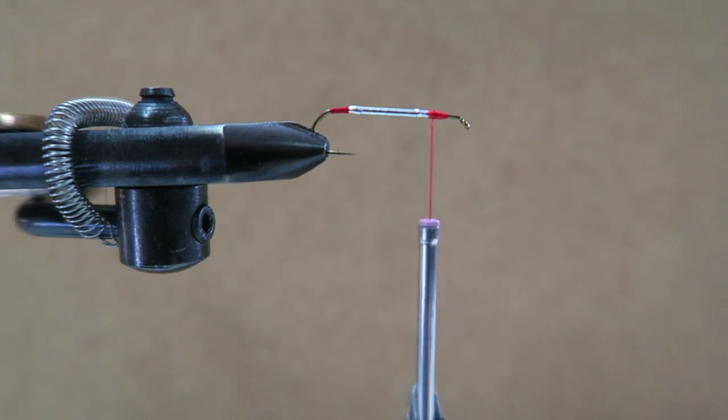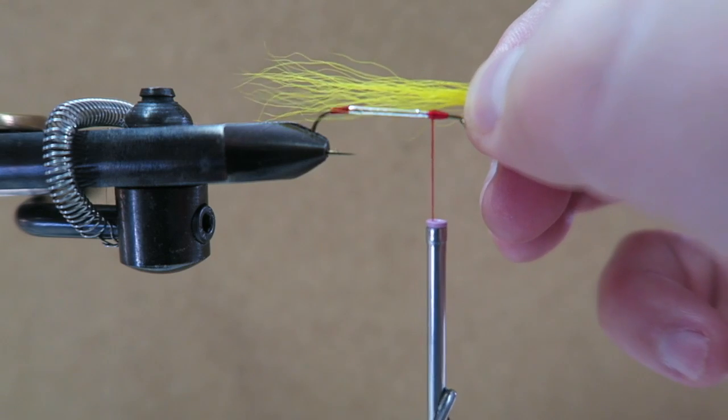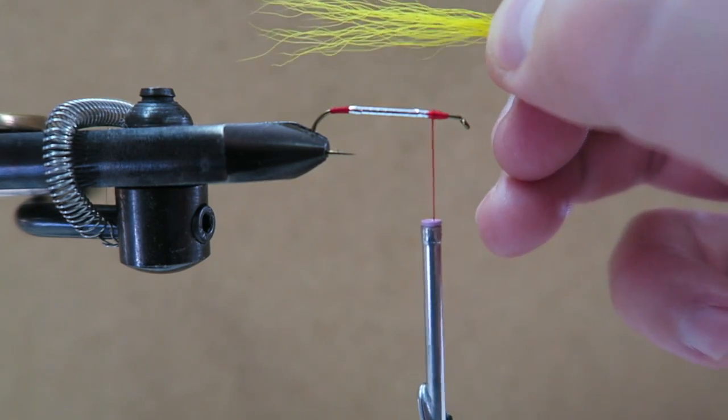Now we're going to be tying on some bucktail. We're going to be using yellow first, then we'll go over that with red, and then one more time with yellow.